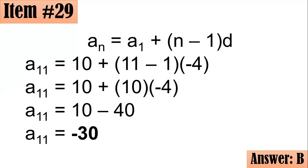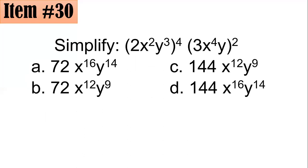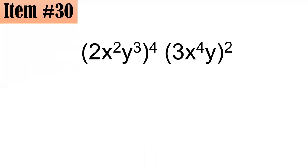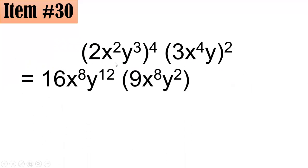Item 30: Simplify (2x squared y cubed) to the fourth times the square of (3x to the fourth y). For the first term: 2 to the fourth is 16, x squared to the fourth is x to the eighth, and y cubed to the fourth is y to the twelfth.